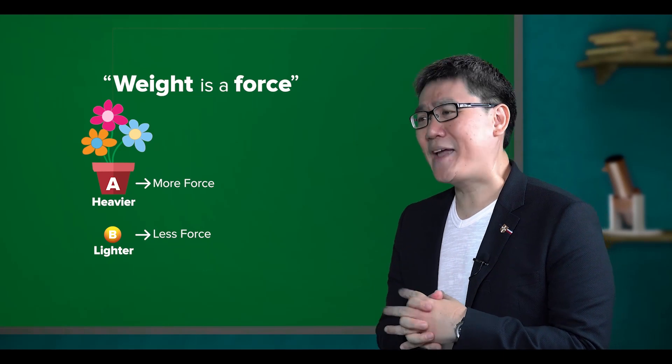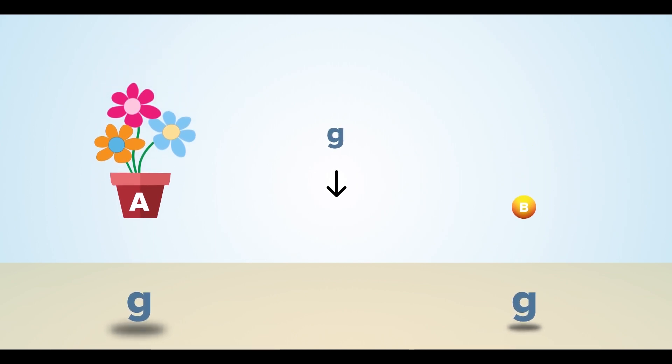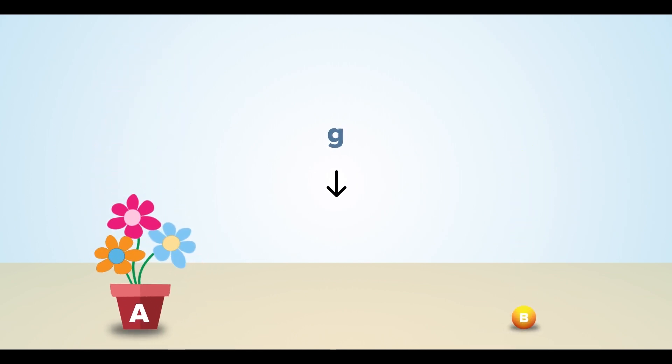Let's have a look at the following example. There are two objects, A and B. Both objects are released at the same time and fall to the ground. Object A makes a much louder sound as compared to object B when they both hit the ground.